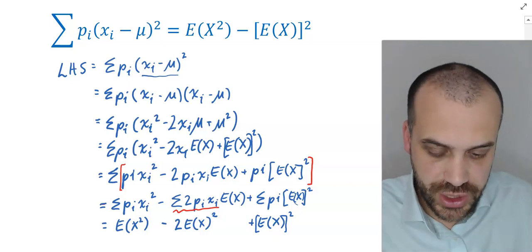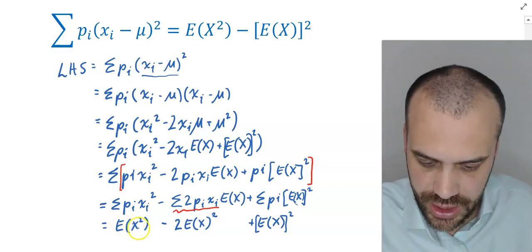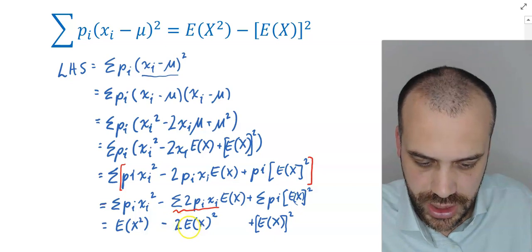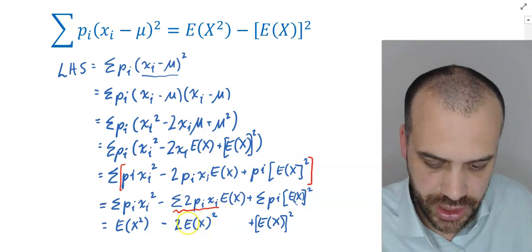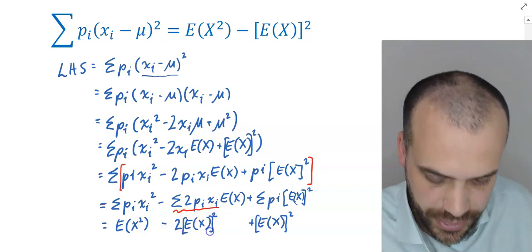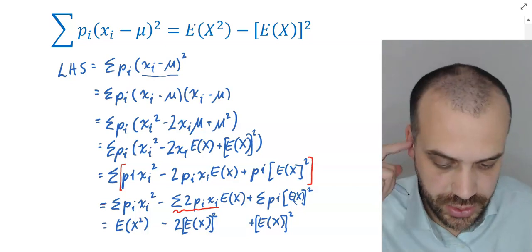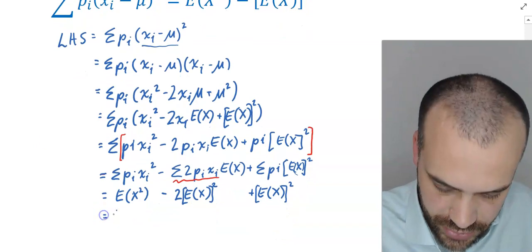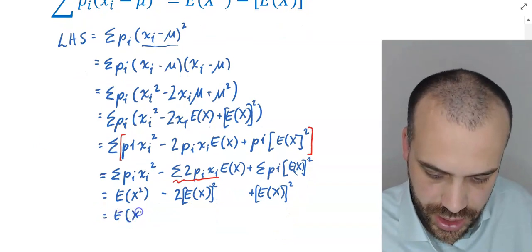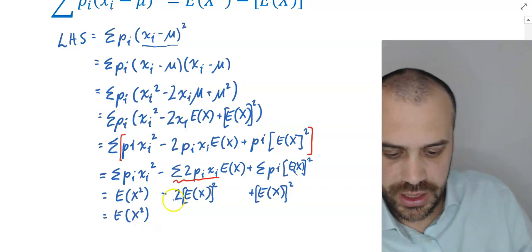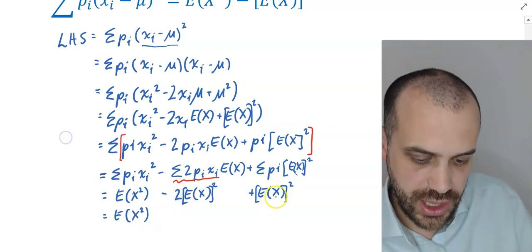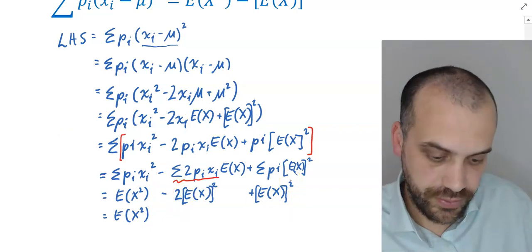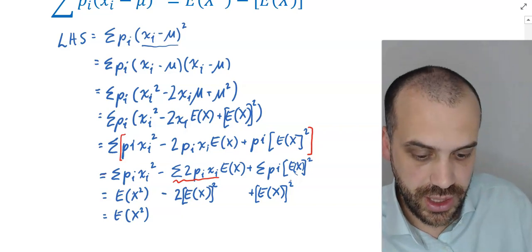So now we can finish this up because we have E(X^2) minus 2 E(X)^2, except it's like this. It's E(X) times E(X), which is E(X)^2, plus E(X)^2. So we have E(X^2), negative 2 E(X)^2, plus E(X) all squared is negative E(X)^2.